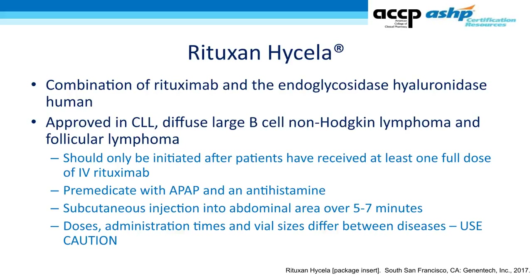Rituxan Hycella is a combination of rituximab and hyaluronidase approved for use in CLL, diffuse large B-cell lymphoma, and follicular lymphoma. It should only be initiated after patients have received at least one full dose of traditional intravenous rituximab. The doses, administration times, and vial sizes differ between disease states, so caution is needed in clinical practice.